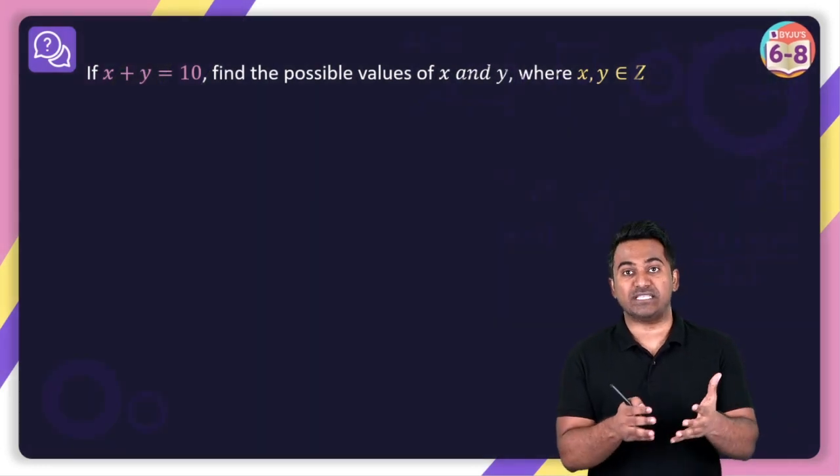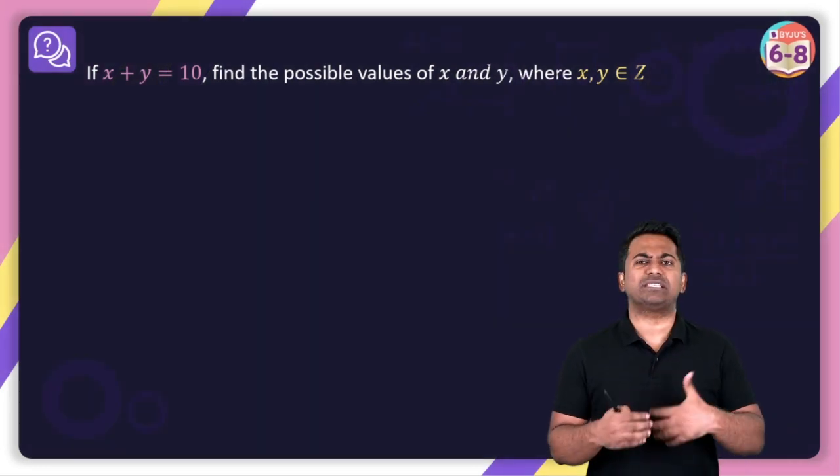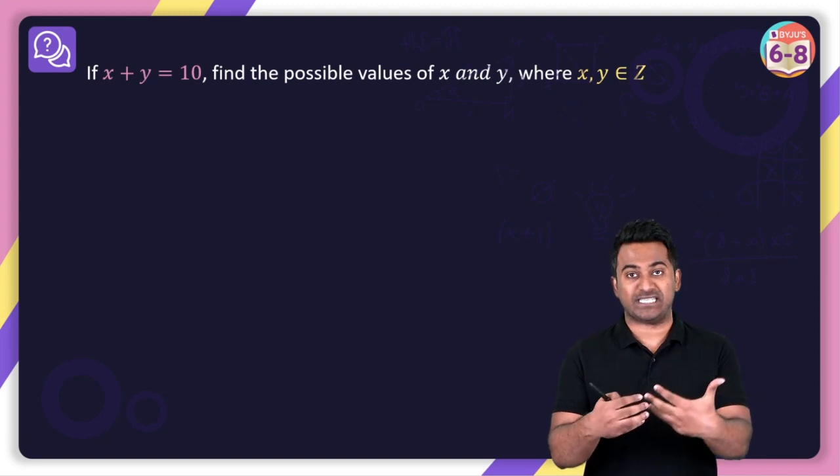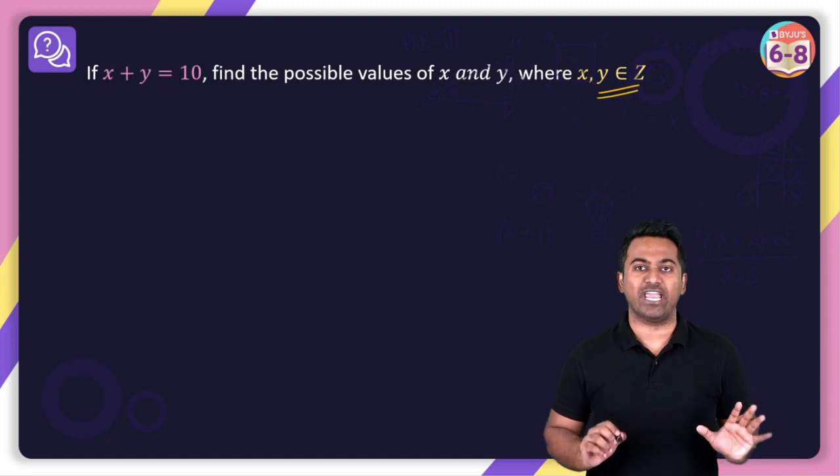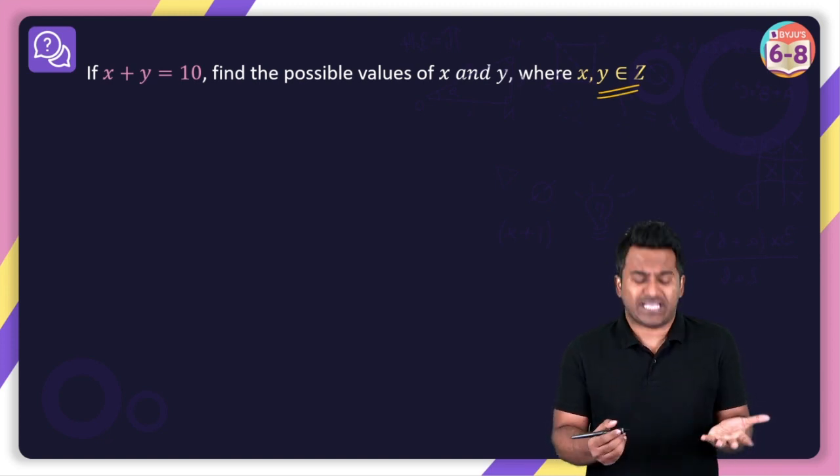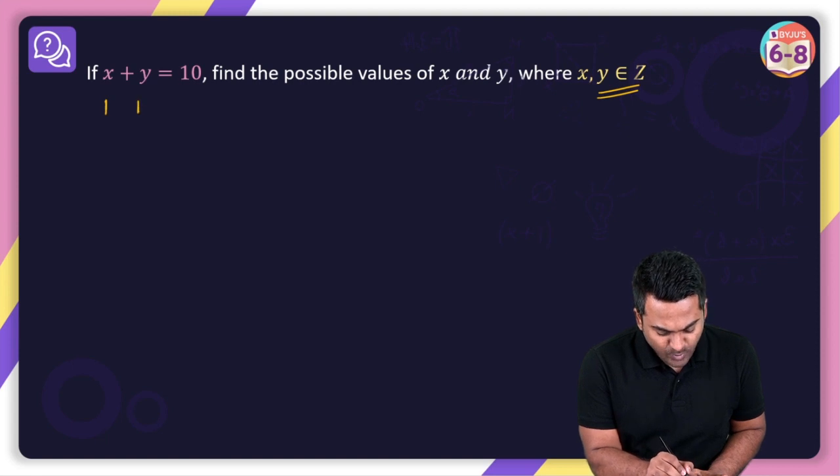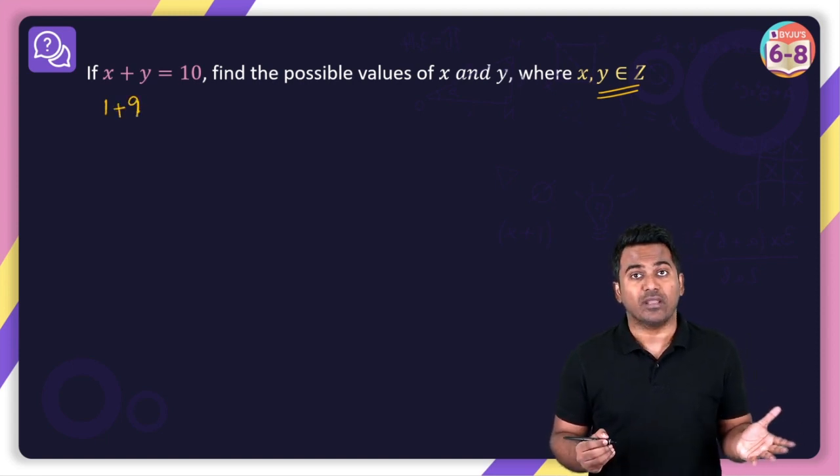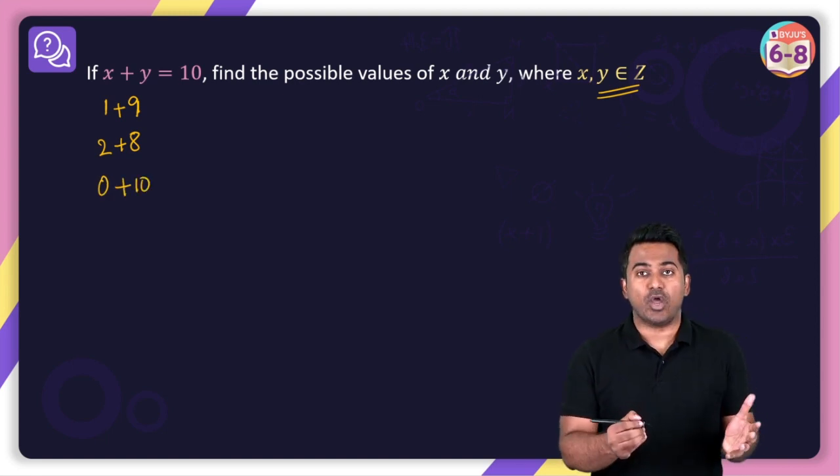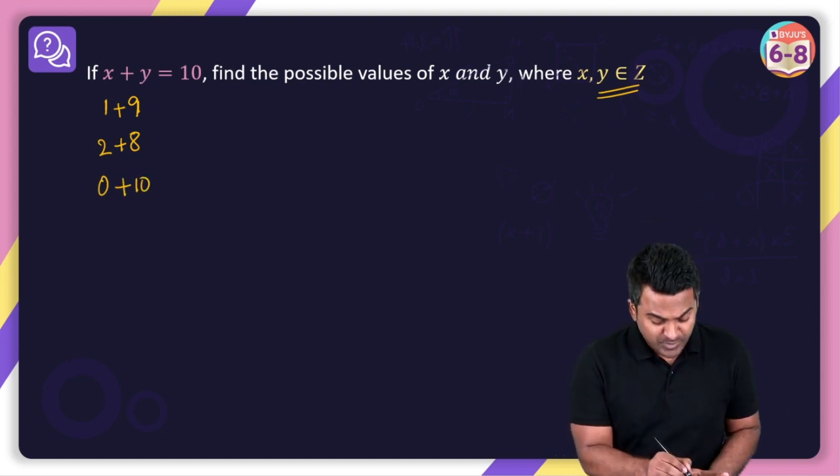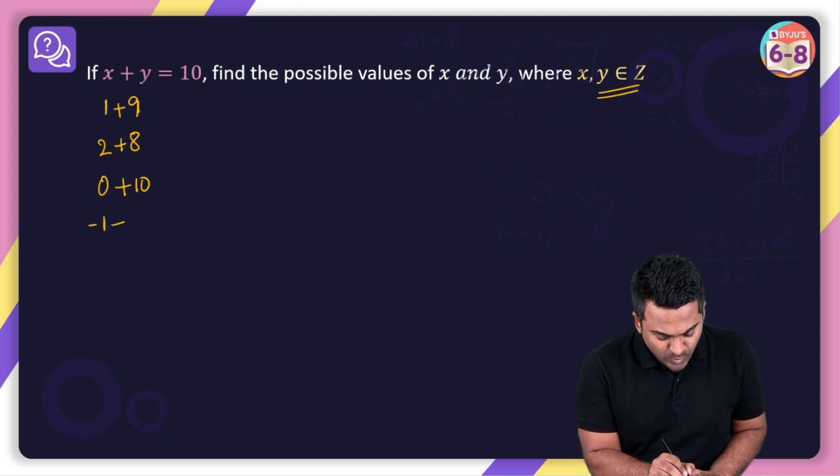If I say x + y = 10, then tell me some possible values for x and y. I've made your job simple here by telling you that x and y are integers. Now some values that x and y can take is: x can be 1 and y can be 9, because 1 + 9 is going to give you 10. There are many other possible values, like x can be 2, y can be 8, x can be 0, y can be 10. Or there may be negative values possible as well, like x can be -1 and y can be 11.